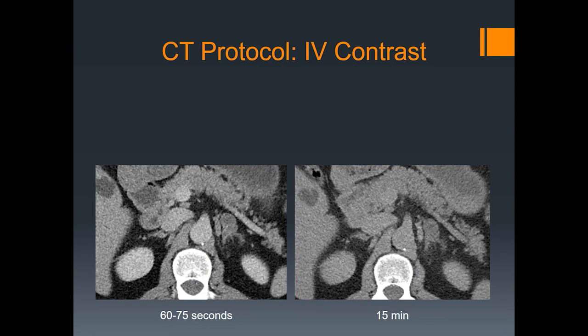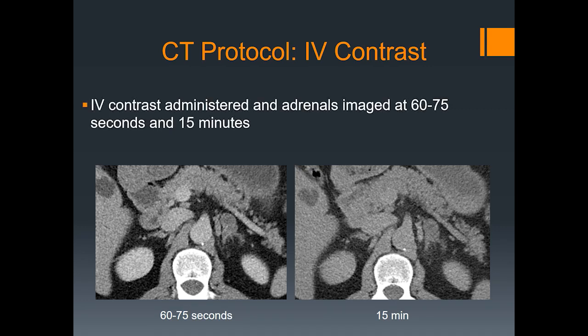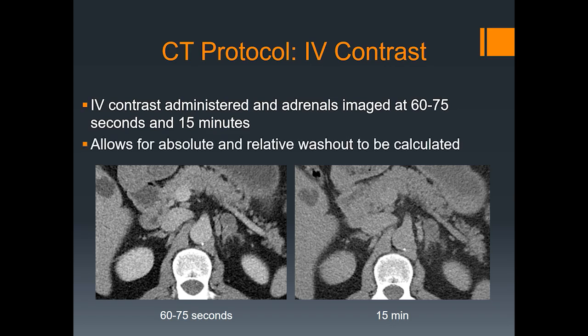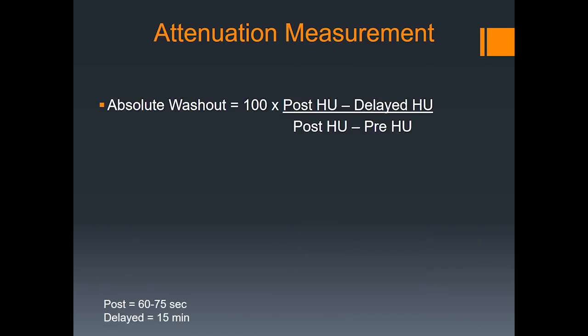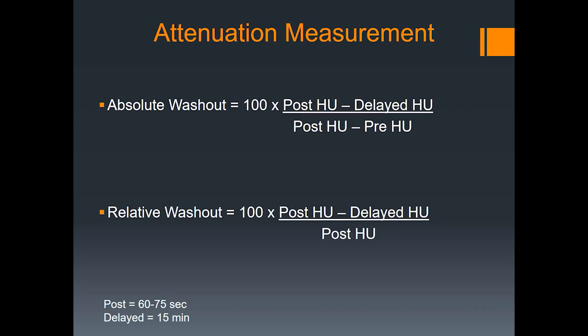If a nodule measures greater than 10 HU units, the contrast portion of the exam should be completed. You'll do two post-contrast phases: one at roughly 60 to 75 seconds, and a second delay at 15 minutes. This allows for absolute and relative washouts to be calculated. When placing your ROIs, it should cover approximately two-thirds of the nodule, centered in the middle, avoiding volume averaging. The absolute washout is calculated by taking the post-contrast (60 to 75 second delay) minus the 15-minute delayed, divided by post minus pre-contrast. Relative washout removes the need for pre-contrast, and takes post minus delayed over post-contrast.